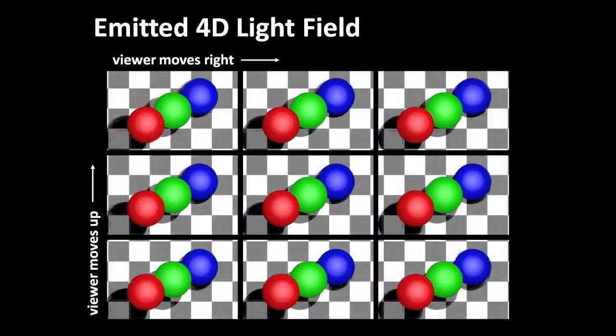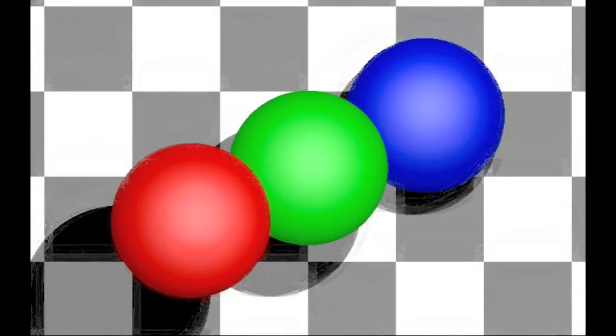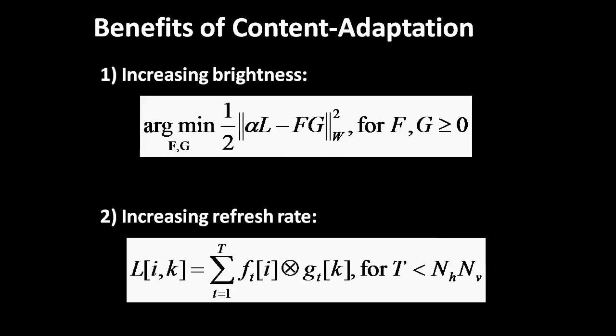The emitted light field closely approximates the target light field. The resulting content-adaptive barriers enable increased display brightness and refresh rates in comparison to conventional parallax barriers.